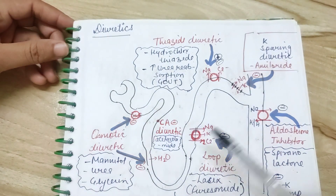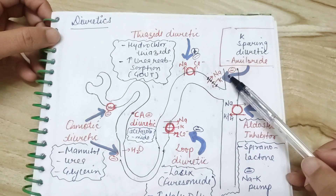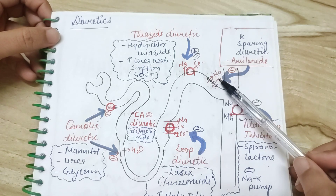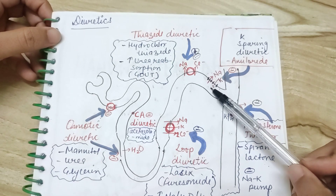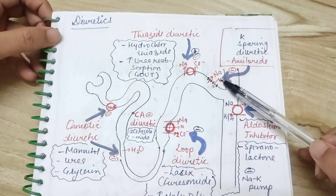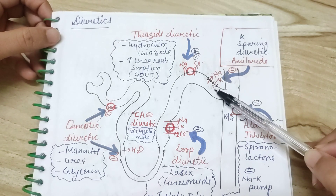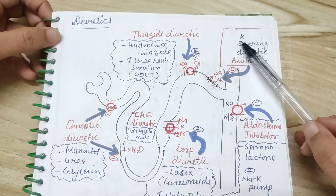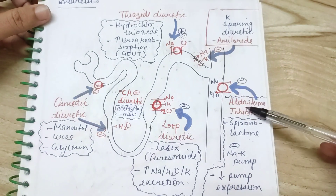In the late DCT or collecting tubule, there are sodium and potassium channels. These are not active pumps — they are leaky channels which are inhibited by amiloride. Potassium secretion is inhibited, meaning potassium is being spared, and that's why we call amiloride a potassium-sparing diuretic.